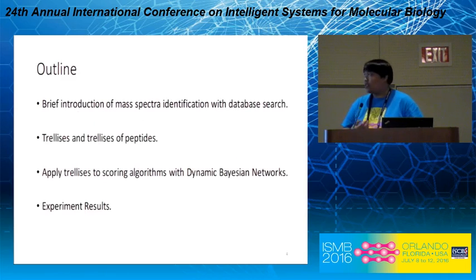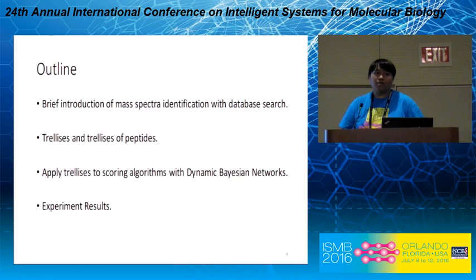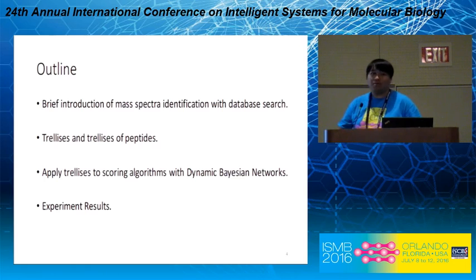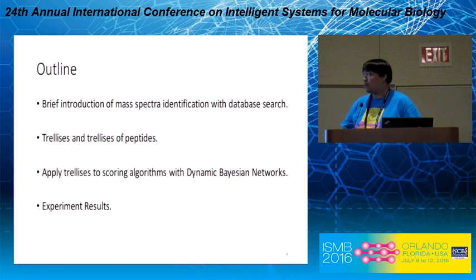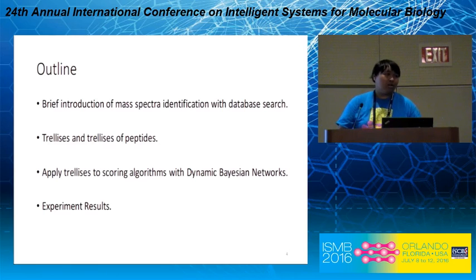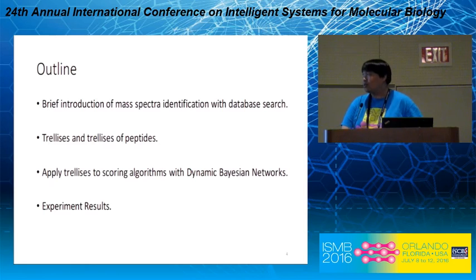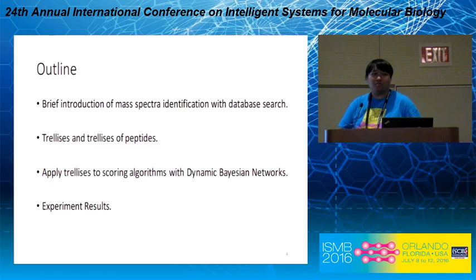The presentation will be structured as follows. First, I will give a brief introduction to the mass spectra identification problem with the database search approach. Next, I will describe the trellis structure and specifically the trellises of peptides. Third, I will show how to apply the trellis structure to various scoring algorithms using dynamic Bayesian networks as a tool. Finally, we will look at the experiment results and see how trellises are effective in practice.